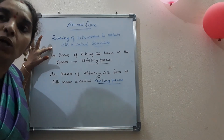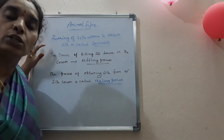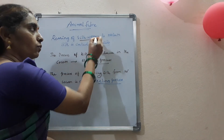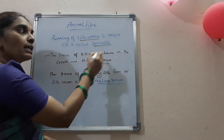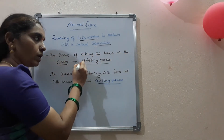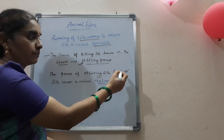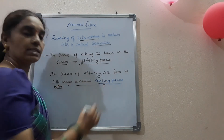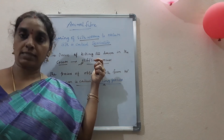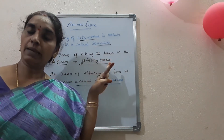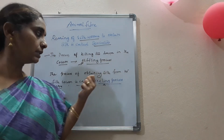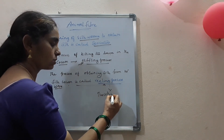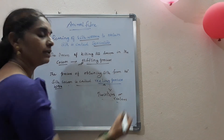Rearing of silkworms to obtain silk is called sericulture. The process of killing the larva inside the cocoon is called the stifling process. The process of obtaining silk from the silkworm cocoons is called the reeling process. In the stifling process, the worms are first steamed, then boiled to loosen the fiber, and then reeled over the reels on reeling machines also called twisters or reelers.